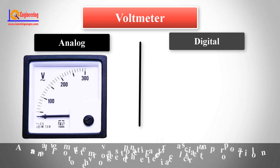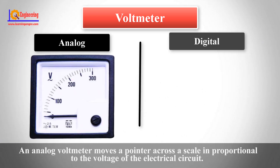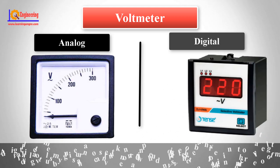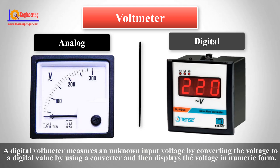An analog voltmeter moves a pointer across a scale in proportion to the voltage of the electrical circuit. A digital voltmeter measures an unknown input voltage by converting the voltage to a digital value using a converter and then displays the voltage in numeric form.